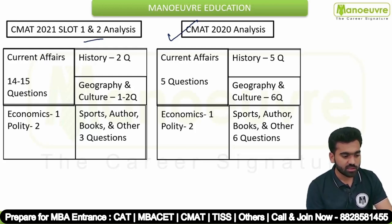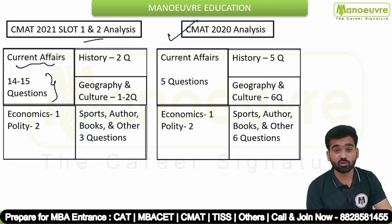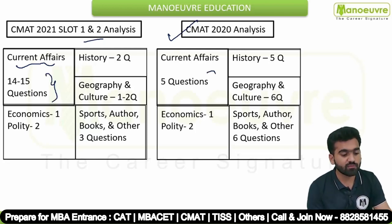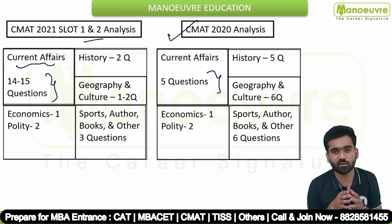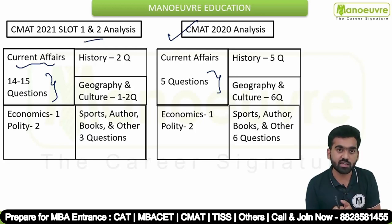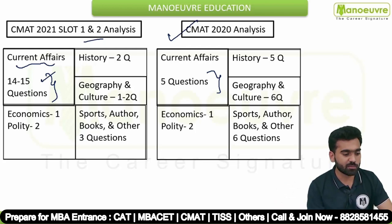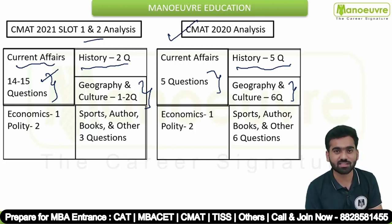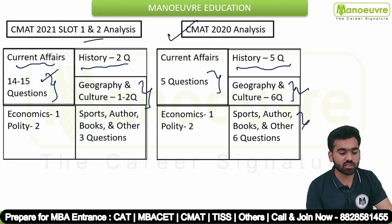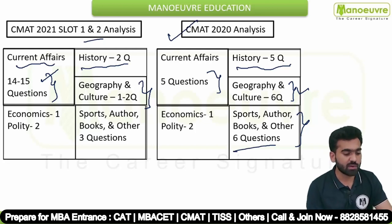In 2021, current affairs topic had 14 to 15 questions, whereas in 2020 only 5 questions were there — that was a huge difference. Instead of 5, there were 15 questions — this was a very unexpected change. Then history had just 2 questions in 2021, while in 2020 history had 5 questions. Geography and cultures had 1 or 2 questions in 2021, but in 2020 geography and cultures had 6 questions — mostly based on capital and currency. Sports, authors, and books-related questions were also many — about 6 questions in 2020, and 3 in 2021.